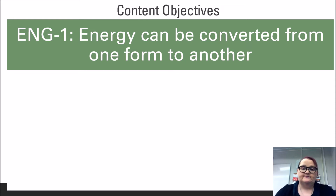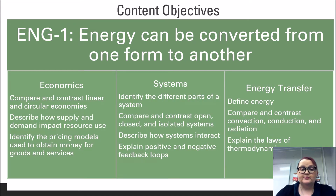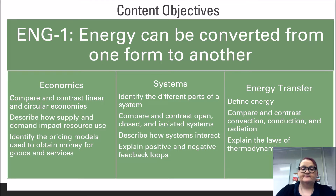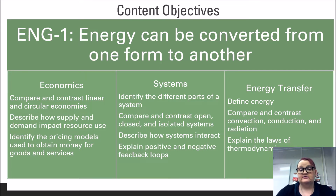We also have to think about how the general laws of physics play a part in the quality and abundance of our access to and use of energy-bearing resources and materials. This leads us to the content objective: understanding that energy can be converted from one form to another. By the end of this lesson, you should be able to compare and contrast linear and circular economies, describe how supply and demand impact resource use, identify the pricing models used to obtain money for goods and services, identify the different parts of a system, compare and contrast open, closed, and isolated systems, describe how systems interact, explain positive and negative feedback loops, define energy, compare and contrast convection, conduction, and radiation, and explain the laws of thermodynamics.